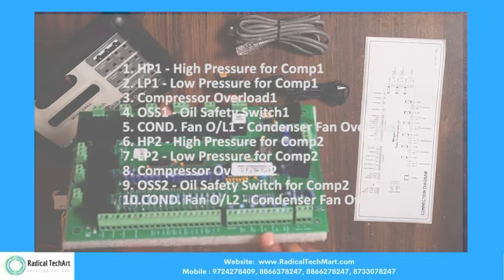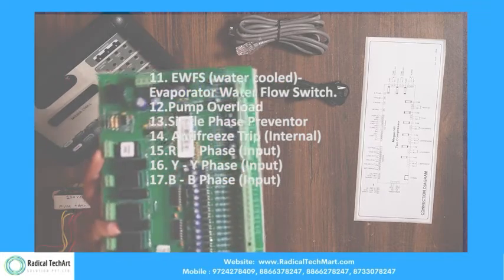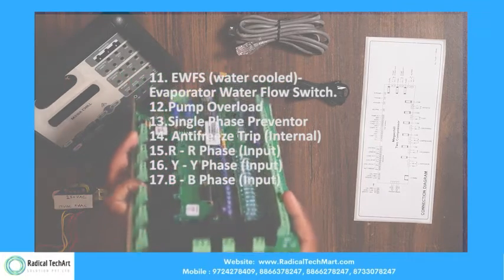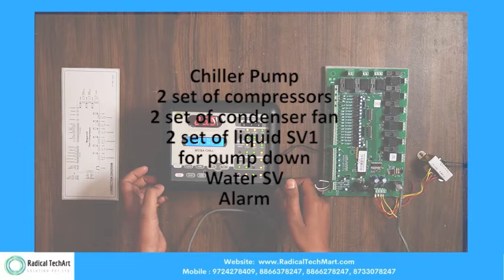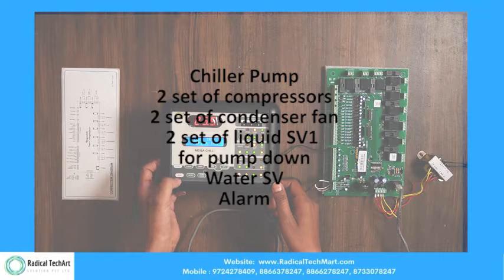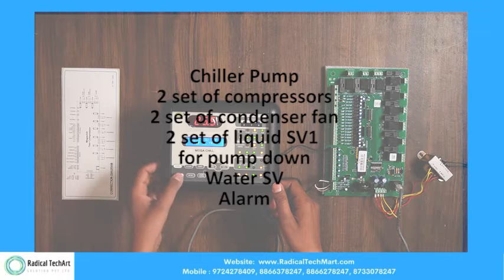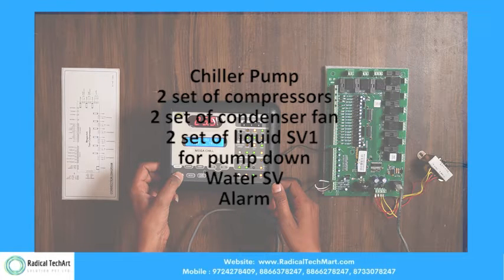Now let's see the digital inputs of the controller. It has various types of digital inputs available — please pause the video to check out all the digital inputs. Now let's see the outputs offered by this controller. The system can operate the following devices: first, the chiller pump; second, two sets of compressors; third, two sets of condenser fans; fourth, two sets of liquid solenoid valves for pump down; fifth, a water solenoid valve; and sixth, an alarm.